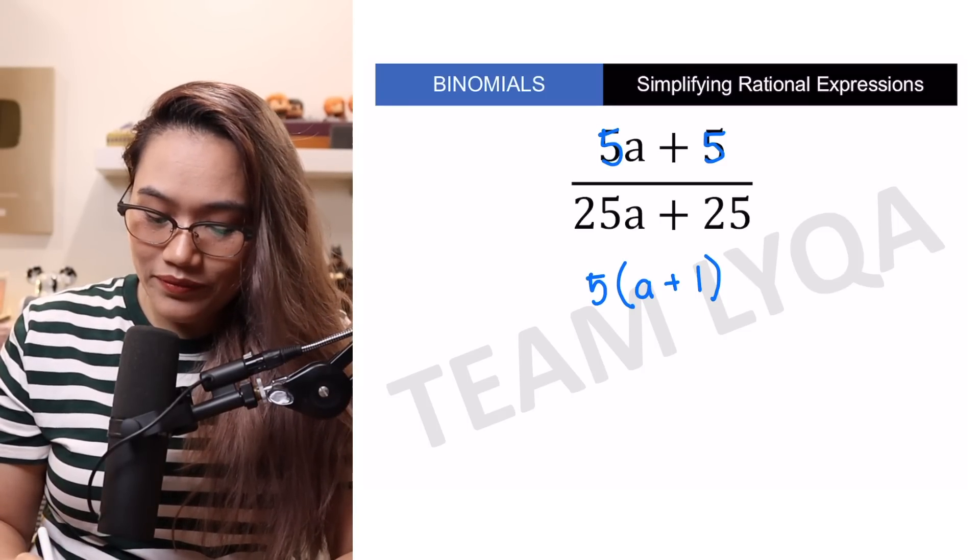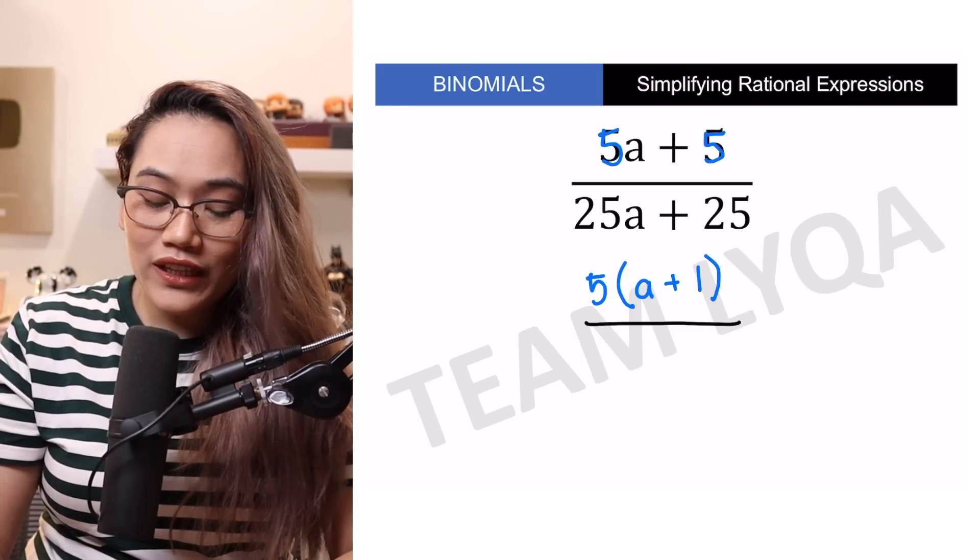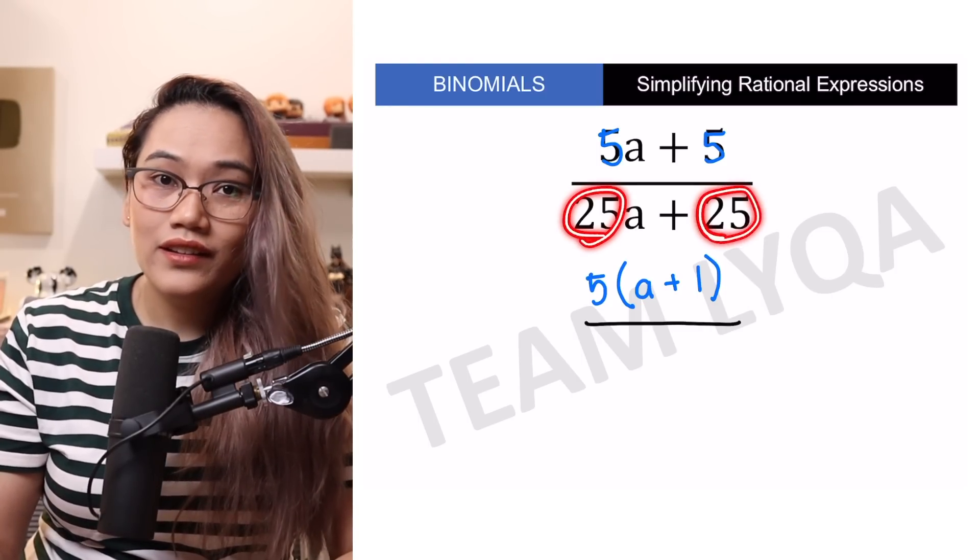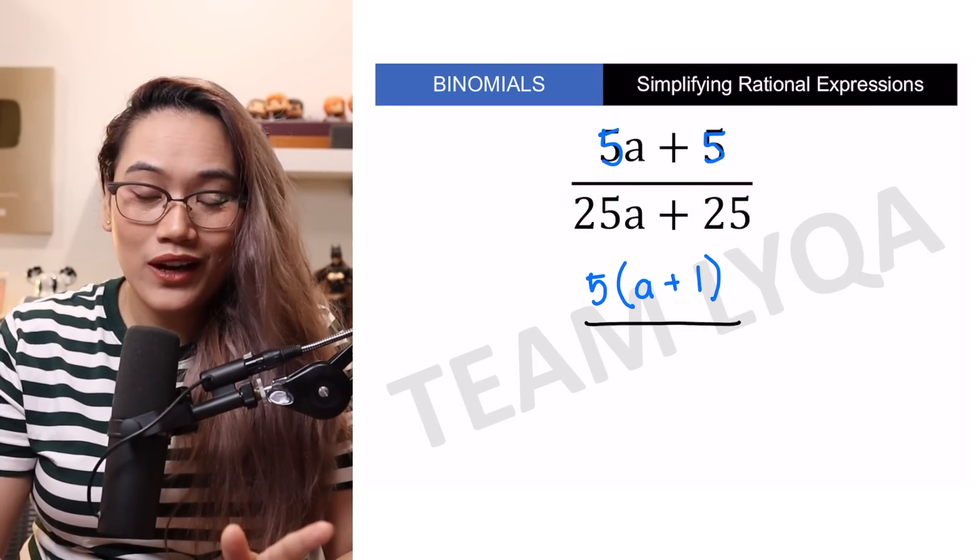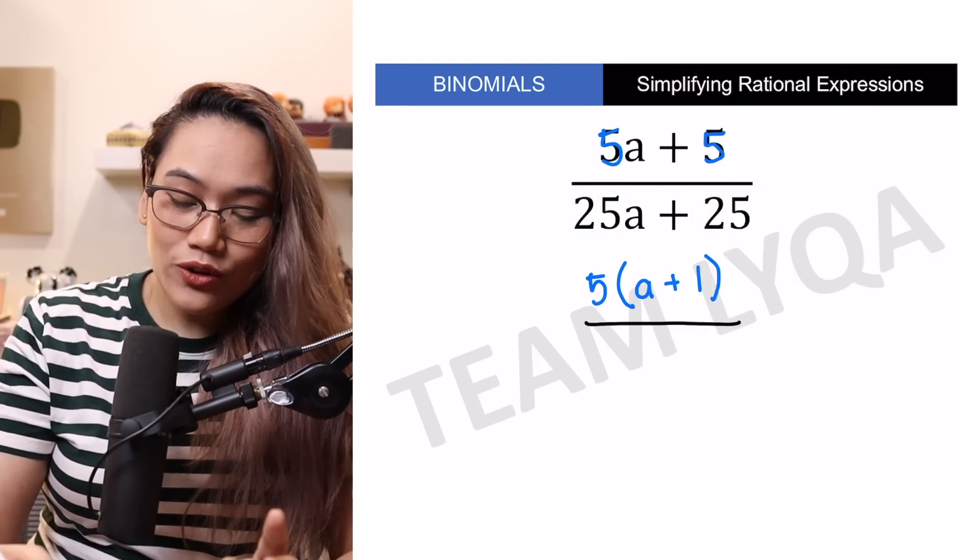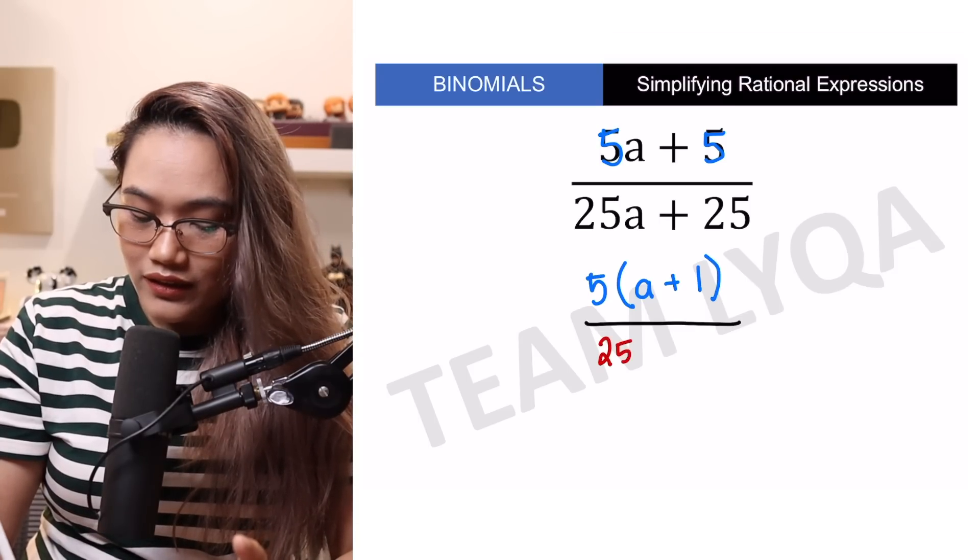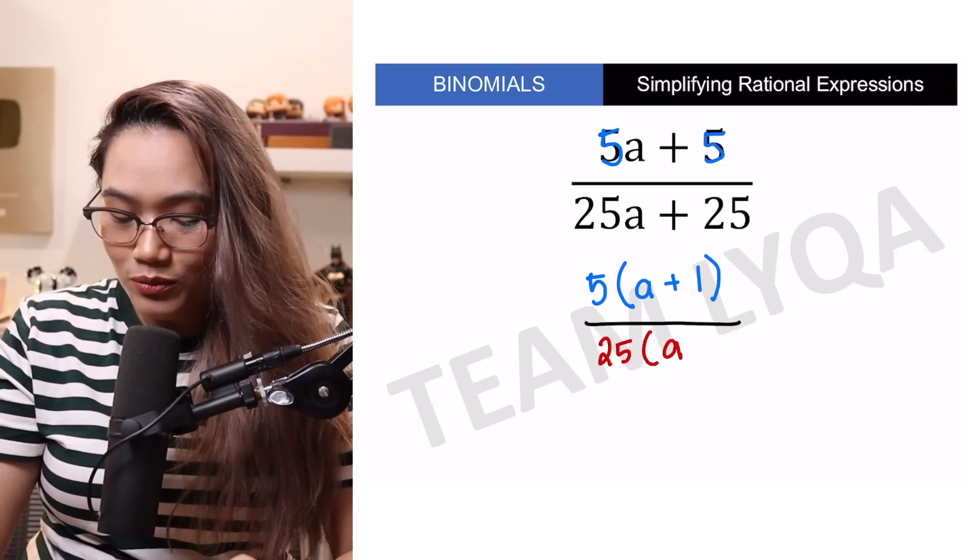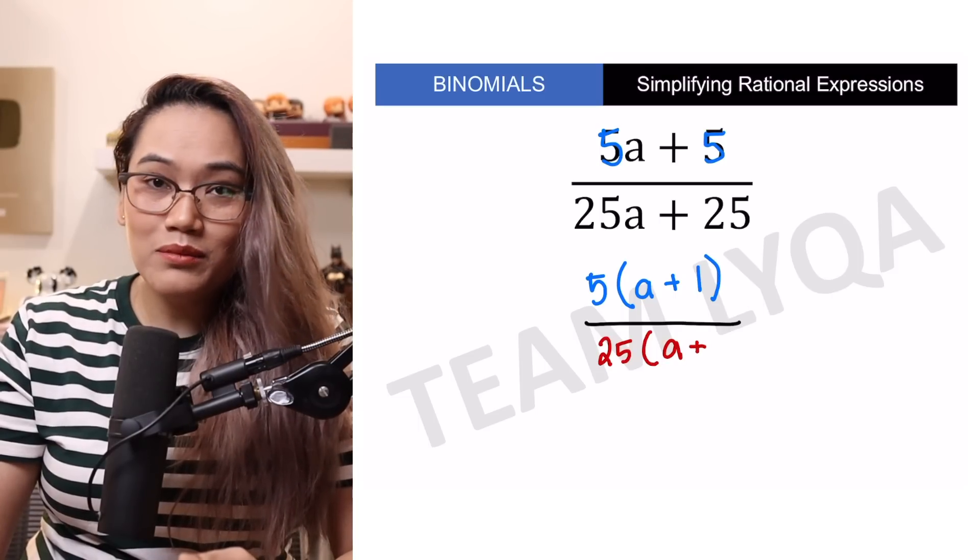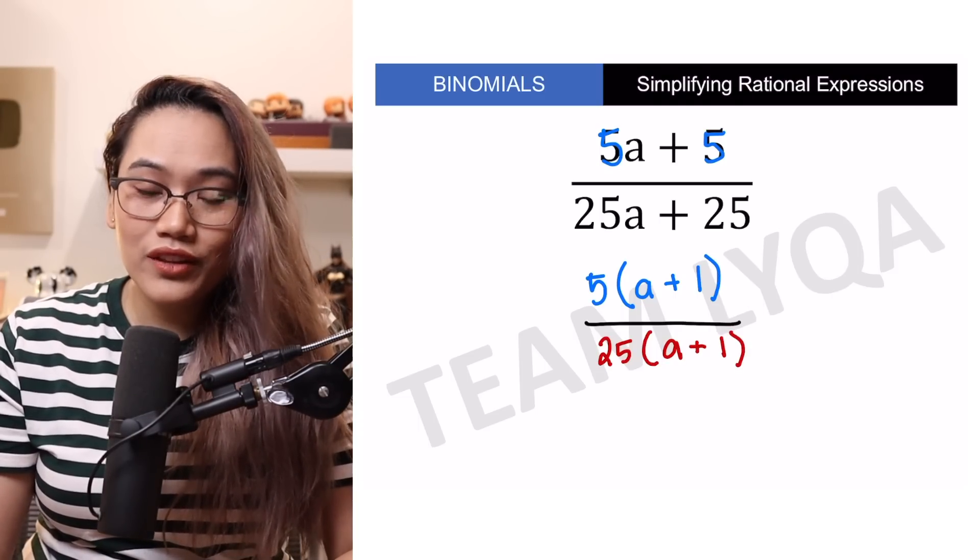Nakatapos na tayo sa taas. Doon naman tayo sa ilalim. You have 25A plus 25. May pagkakahawig ito dahil pareho naman yung kanyang numerical coefficient, or yung number nitong dalawa. So, ibig sabihin nun, pwede ko rin ilabas yung 25. Tapos, ano ang minumultiply ko sa 25 para maging 25A? That would be A. Anong minumultiply ko sa 25 para maging positive 25? Plus 1 lang din.